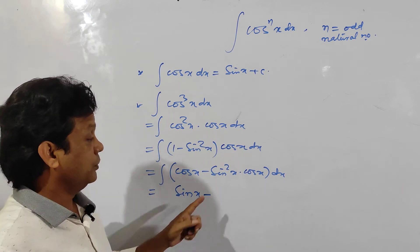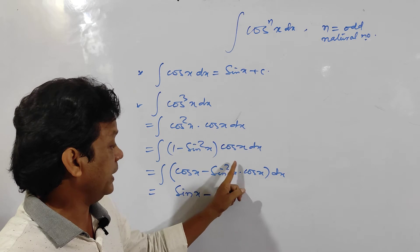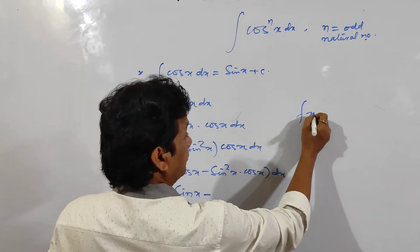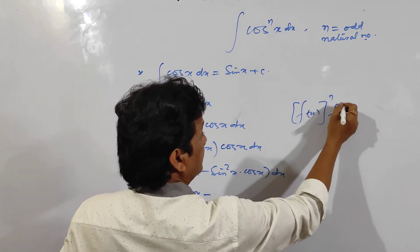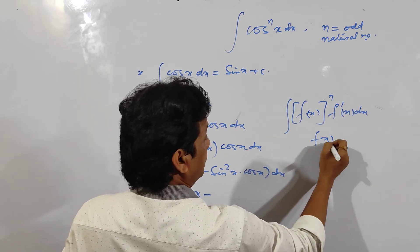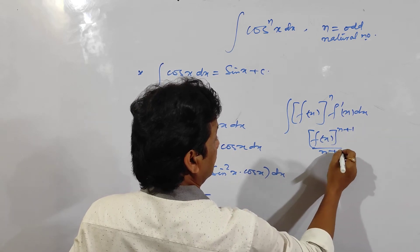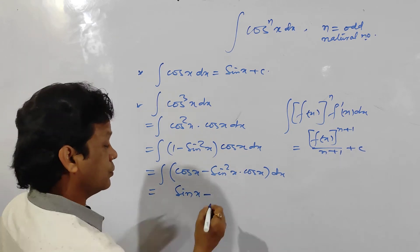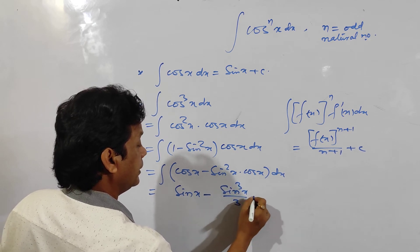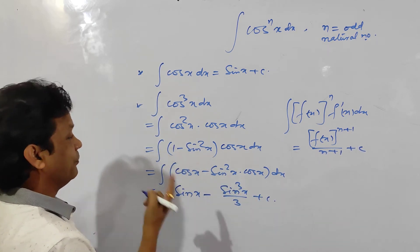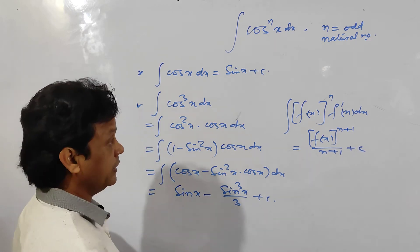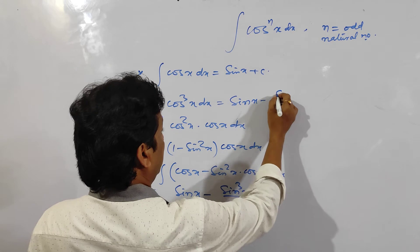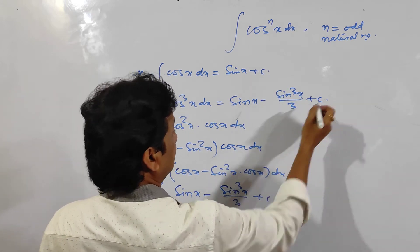The integration of cosec x is simply sin x. Now using the formula: integral of f(x)^n into f'(x) dx equals f(x)^(n+1) divided by (n+1) plus c. Here f(x) is sin x, so derivative of sin x is cos x, and it will be sin cube x by 3 plus c. So the formula for integration of cos cube x is sin x minus sin cube x by 3 plus c.